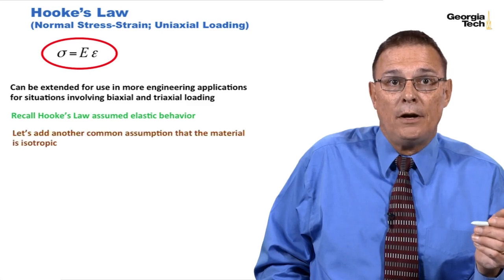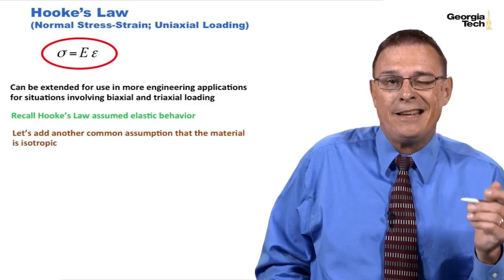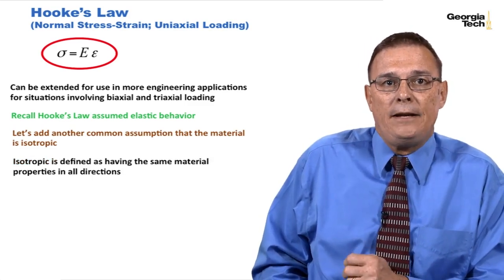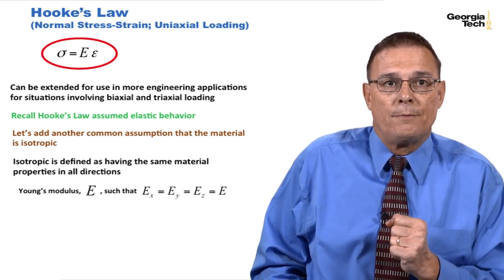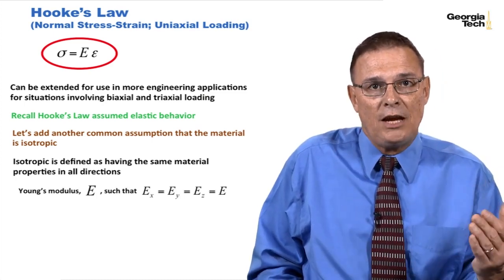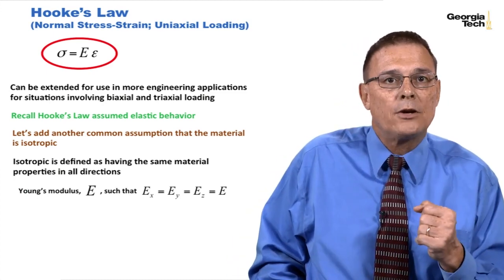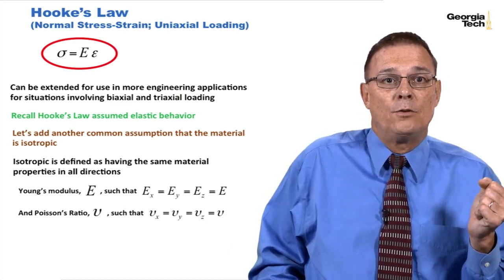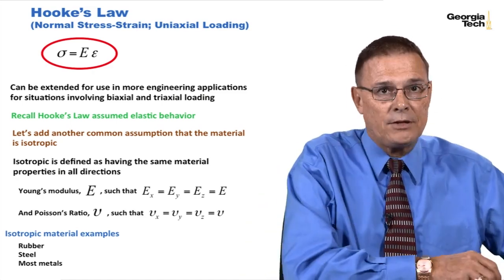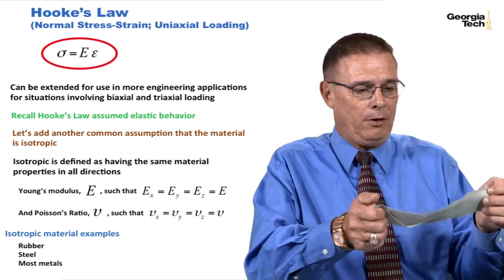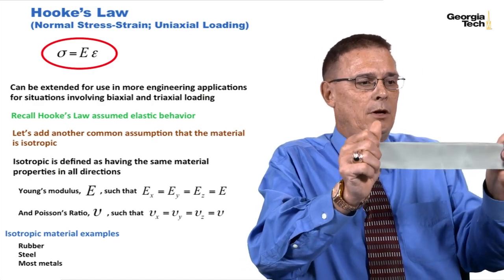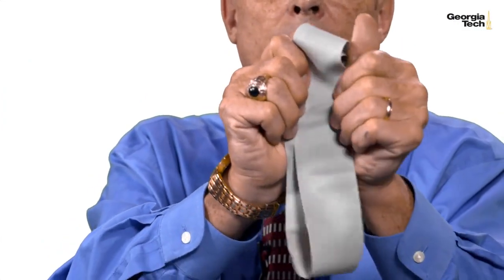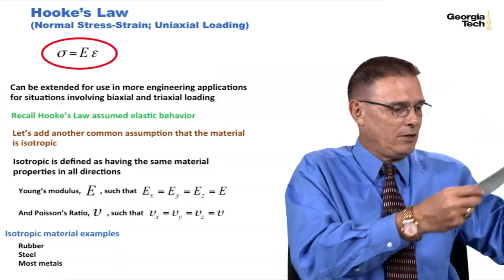Recall Hooke's Law assumed elastic behavior, but let's add another common assumption: that the material is isotropic. Isotropic is defined as having the same material properties in all directions. That means Young's modulus is the same whether we pull in the x, y, or z direction, and Poisson's ratio is the same in the x, y, and z directions. Some isotropic material examples are rubber, steel, and most metals. Here's an isotropic rubbery elastic material — whether I pull in this direction or any other direction, the material properties are the same.